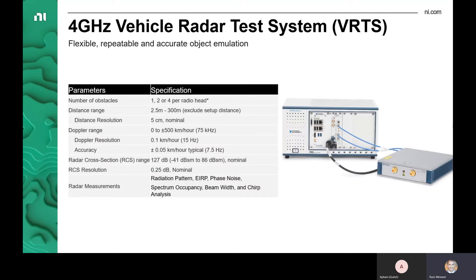Now here are some of the key specifications for the NI-VRTS platform and one of the major improvements is the distance resolution that now goes down to five centimeters and also the published specifications for the RCS range and RCS resolution that is basically a more tighter capability that is being delivered with the VRTS.